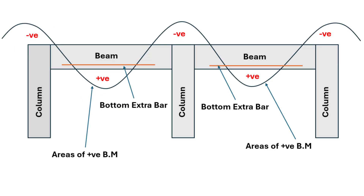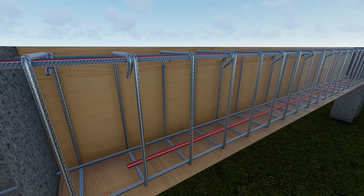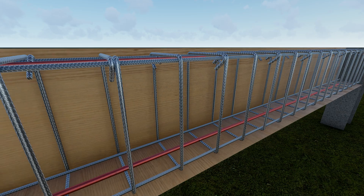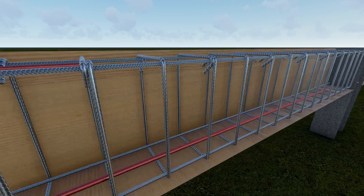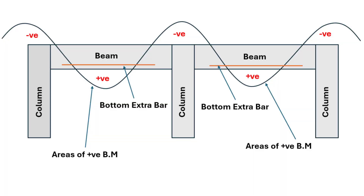While bottom extra bars are added in areas where positive moments occur, typically in the mid-span region of the beam. Here the bottom of the beam is in tension and extra bars are necessary to handle the load. Without these extra bars, the beam may not perform as required, leading to cracks or even failure in high stress regions.